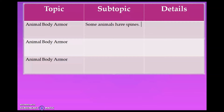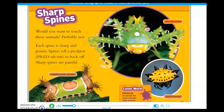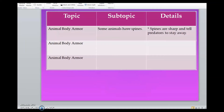Now what we want to do is look back to the text and find some important details about spines and animals that have them. There are lots of details in this section about specific animals and their spines, but I want to try to pick details that can apply to most animals. Let me reread this first paragraph: Would you want to touch these animals? Probably not. Each spine is sharp and pointy. Spines tell a predator to back off. Sharp spines are painful. This seems to be a fact about animals with spines that applies to all of them — they're sharp and they tell predators to go away. That's one way animals are protected by their body armor. My detail about spines is that spines are sharp and tell predators to stay away. I took what the author said and put it in my own words.